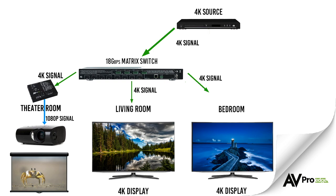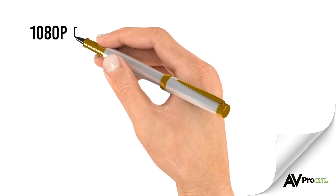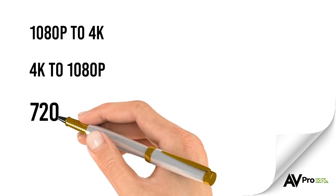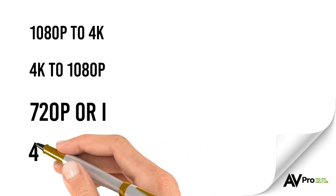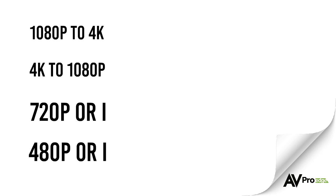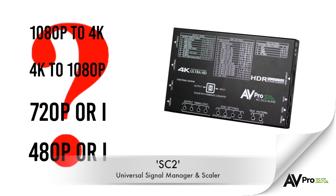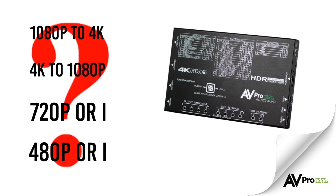At AVPro Edge, we understand scaling, and have even developed matrices with built-in scalers on each output. So far, we have only covered 1080p to 4K and 4K to 1080p. But what happens when you have a 720p, 480p, or 480i resolution and a 4K display, or vice versa? Fortunately, the process is the same, and with AVPro Edge's SC2 Universal Signal Manager and Scaler, you can handle a wider array of resolutions.